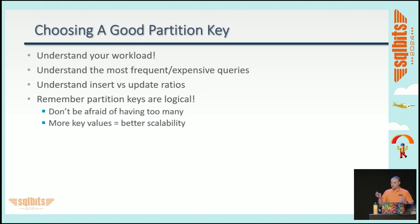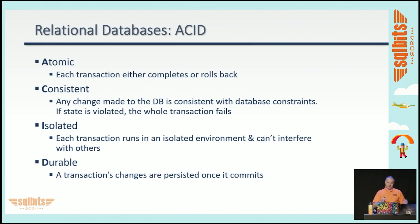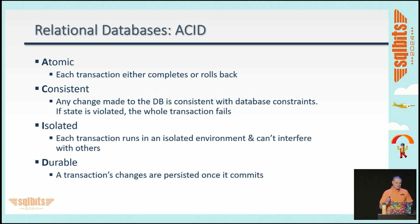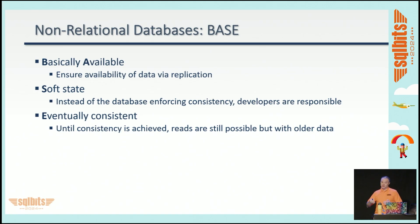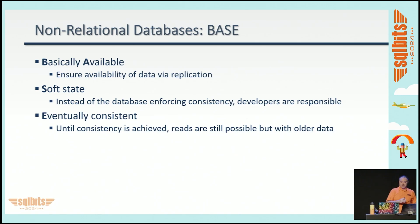Going back to theory: relational databases are ACID compliant — atomicity, consistency, isolation, durability. On the NoSQL side, they came up with BASE: Basically Available, so we ensure availability with replication. Soft states mean the database isn't enforcing as much consistency — developers of the application handle that. And eventual consistency: if the most current copy of data isn't available when queried, it might present an older version in the meantime. This is good in a lot of cases, depending on the application.